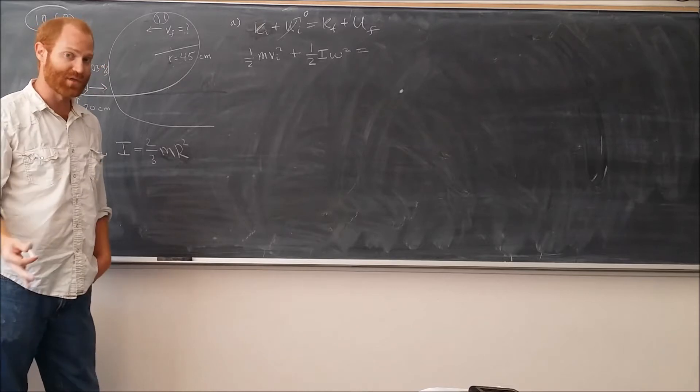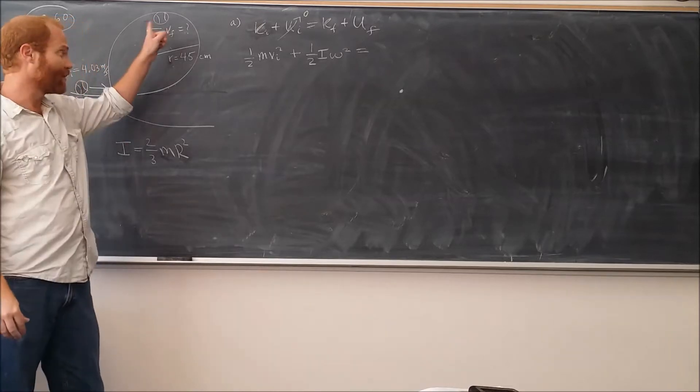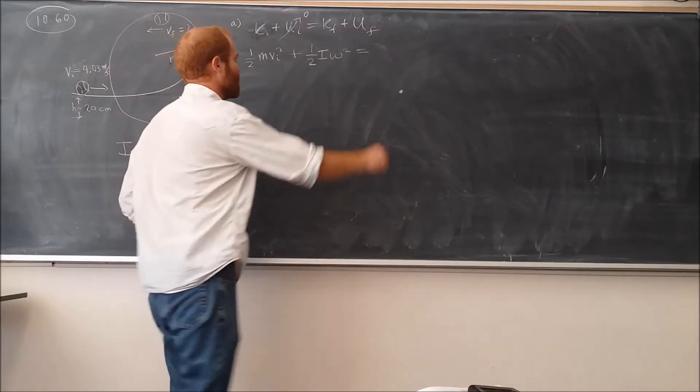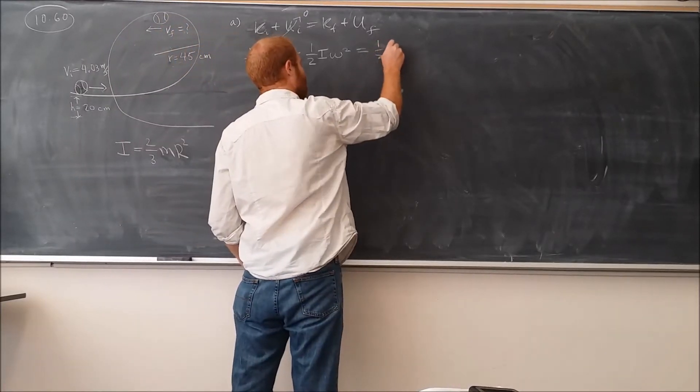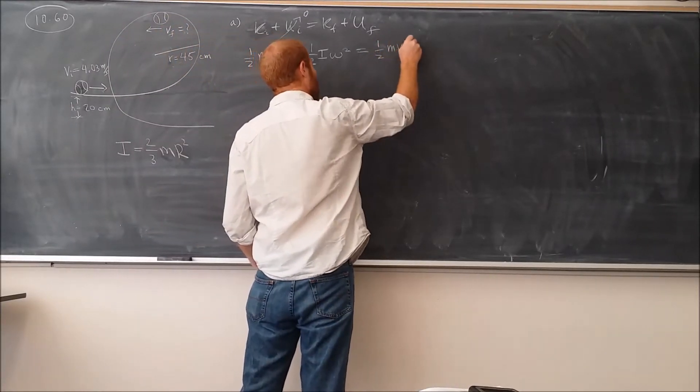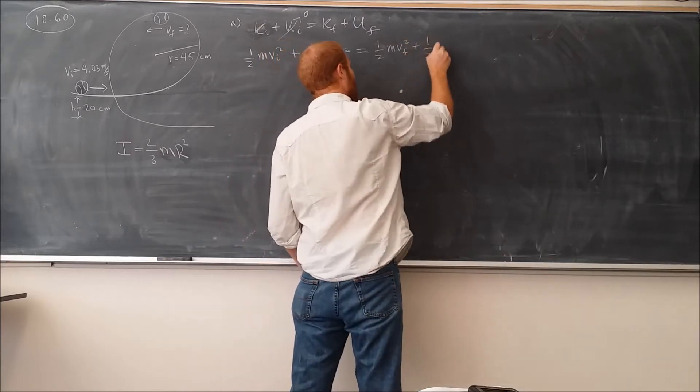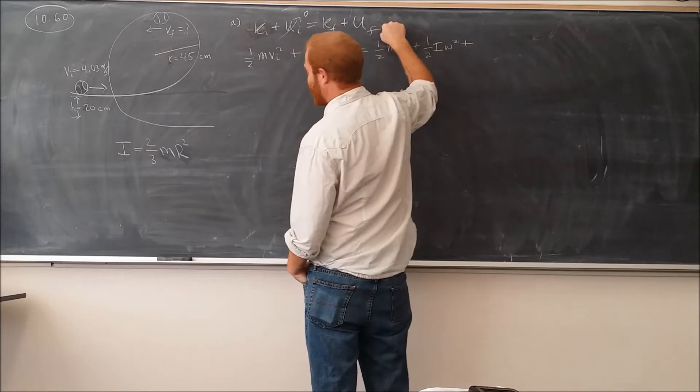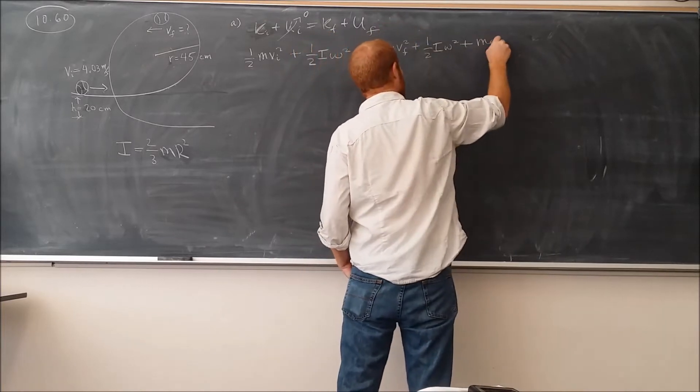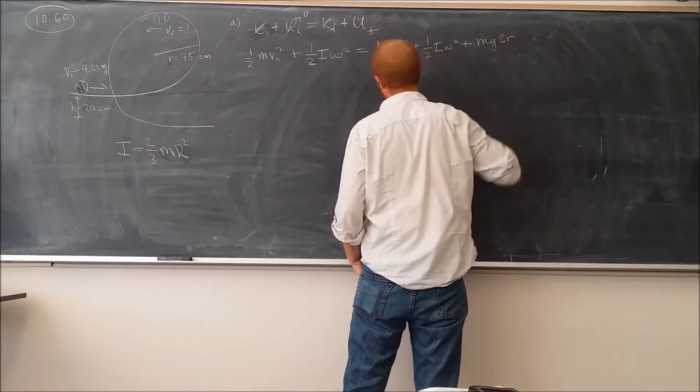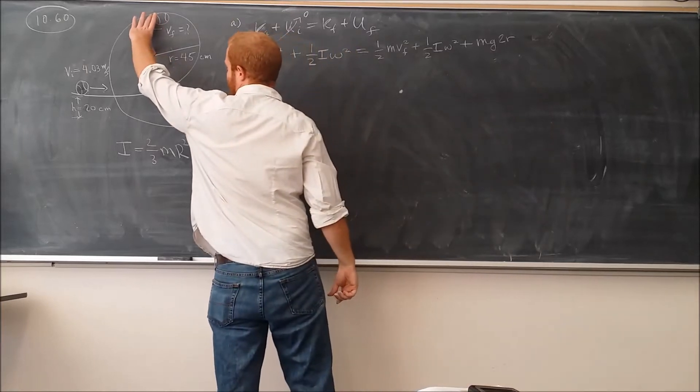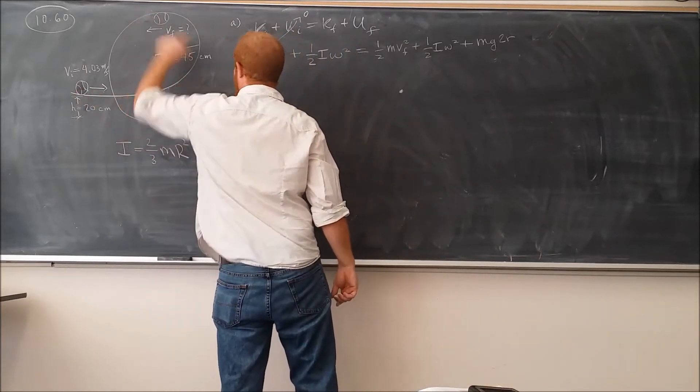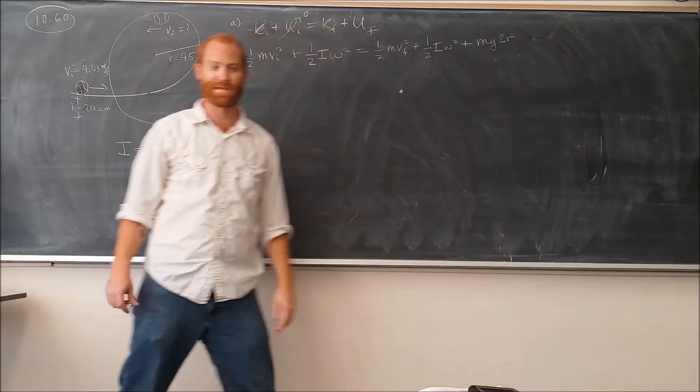The final kinetic energy is going to look exactly the same, because when it gets to the top here, it's going to be rolling as well. It's just going to be rolling that way. And so we're going to have 1/2. And then the final potential energy will be given by its mass, gravity, times 2R, where R is the distance here. Because it's going from this point right here to R. That's the change in height.